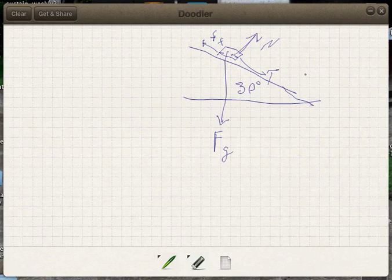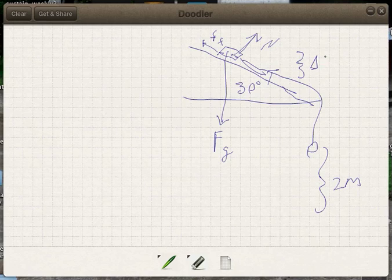So we want to find the work done as this falls two meters. As this falls two meters, this will slide across the surface two meters and drop delta H of one meter because the sine of 30 degrees is one-half.